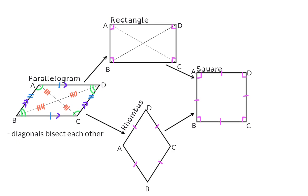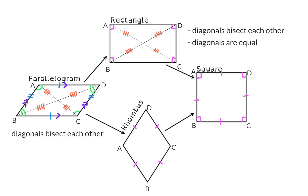Moving to our rectangle: it is still a parallelogram, so the property that the diagonals bisect each other is still true. But there is an extra property making this a rectangle, and that is that the two diagonals are equal in length — so AC is the same length as BD.